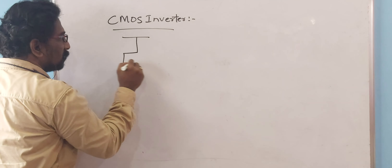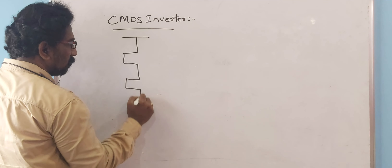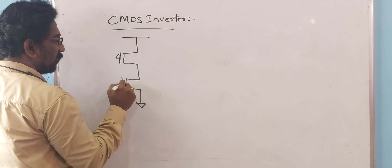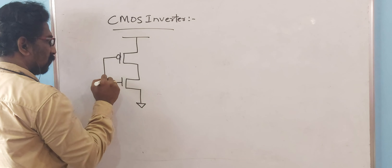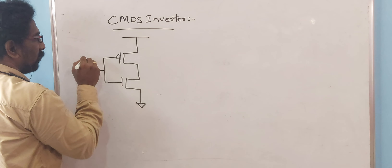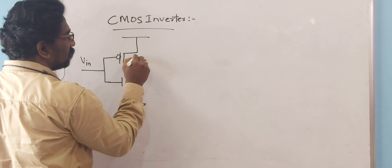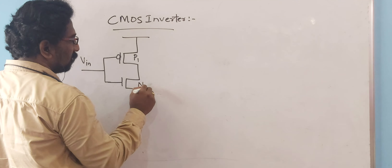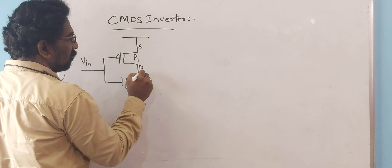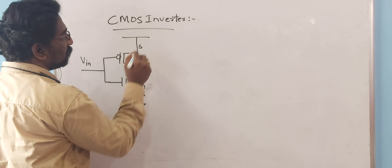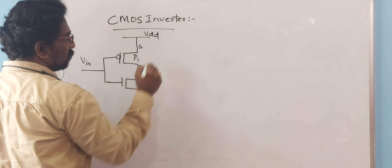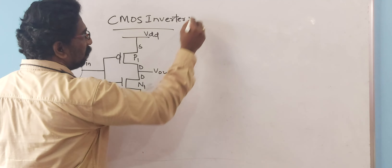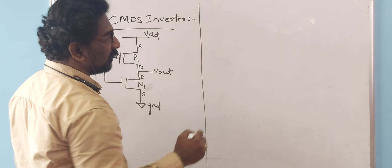A CMOS inverter has two transistors — one is PMOS and the other one is NMOS. VIN is the input. P1 is the PMOS and N1 is the NMOS, with source, drain, drain, and source terminals of the transistors. VDD is the power supply and GND is the ground terminal. The output is taken between the two drain terminals.